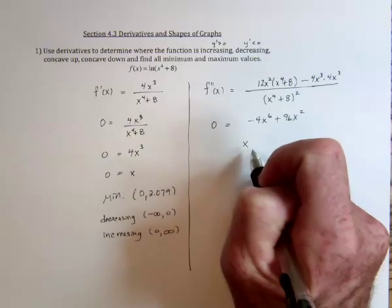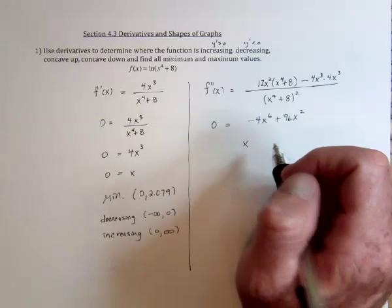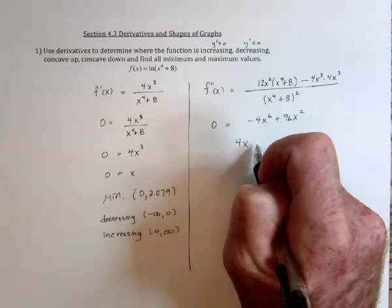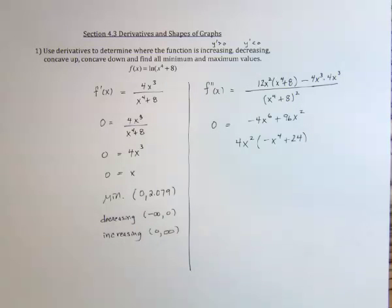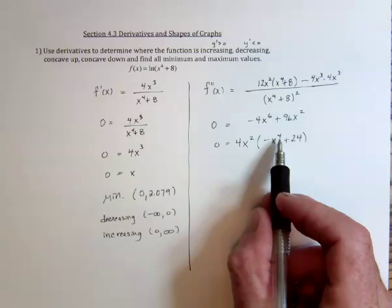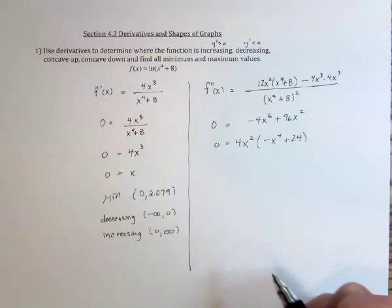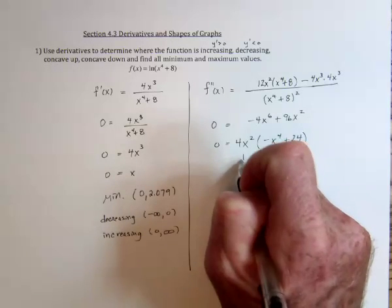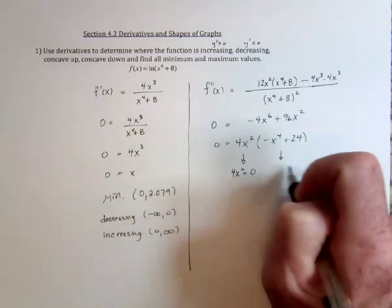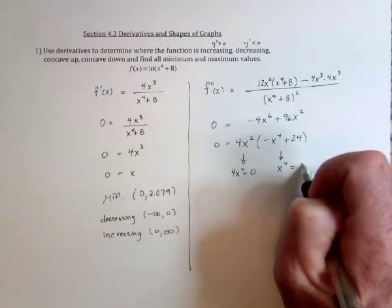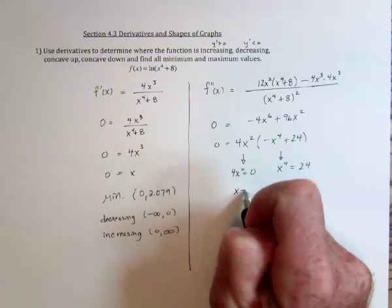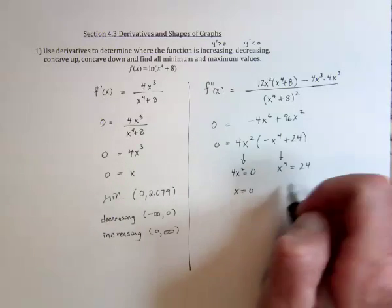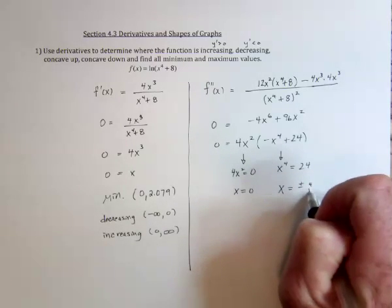Now factor. I can factor out a 4, which would leave negative x to the fourth and 24. Setting each factor equal to zero: 4x squared equals zero gives x equals zero, and then x to the fourth equals 24. Taking the fourth root gives plus or minus the fourth root of 24.